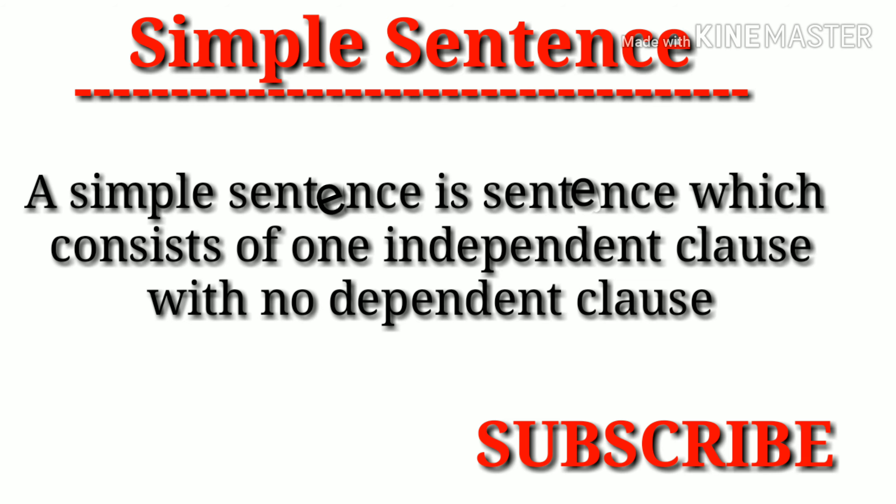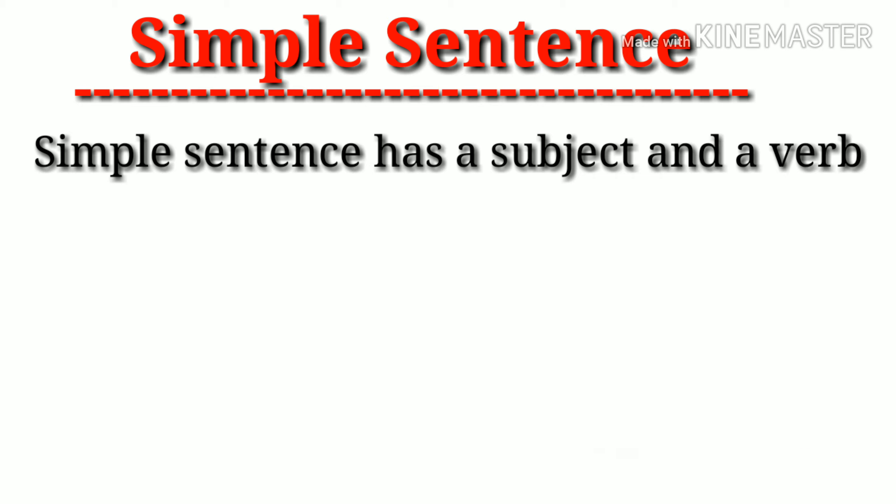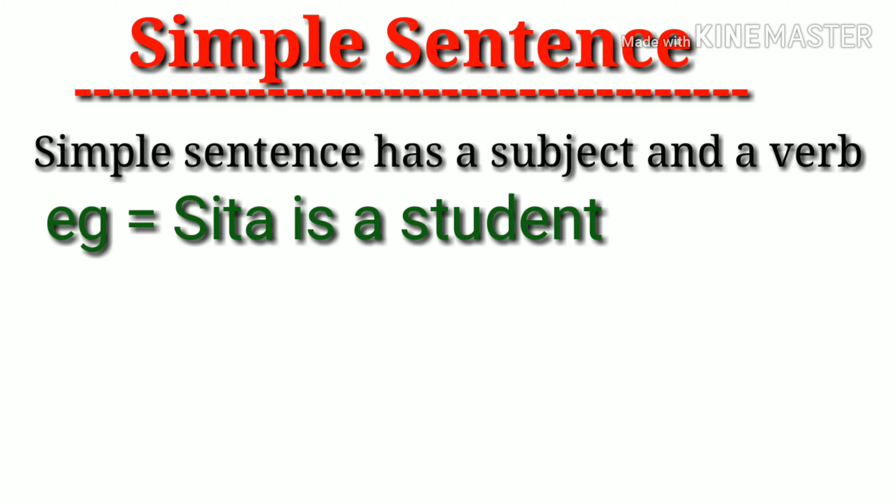Now maybe you have confusion about dependent and independent clause, so we will clear out this confusion through a sentence. The first sentence is 'Sita is a student'. This sentence is complete because Sita is a student, and there is no confusion.